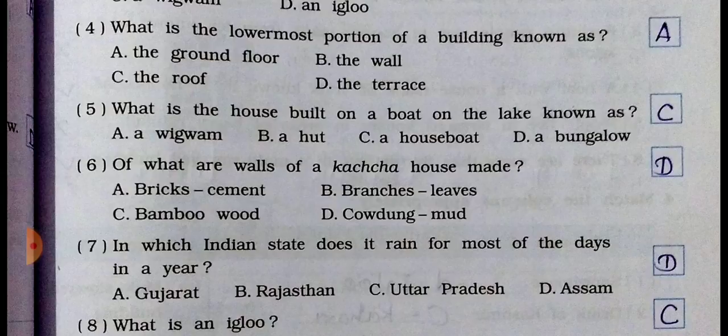Question number five: what is the house built on a boat on a lake known as? Option A: a wigwam. Option B: a hut. Option C: a houseboat. Option D: a bungalow. C is the right answer — a houseboat. A house built on a boat is called a houseboat. C is the right answer for question five.